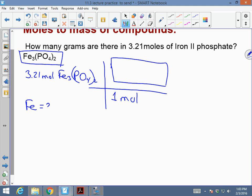Fe, I have three of them. Phosphorus, I have two of them. Oxygen, I have four times two, eight of them.